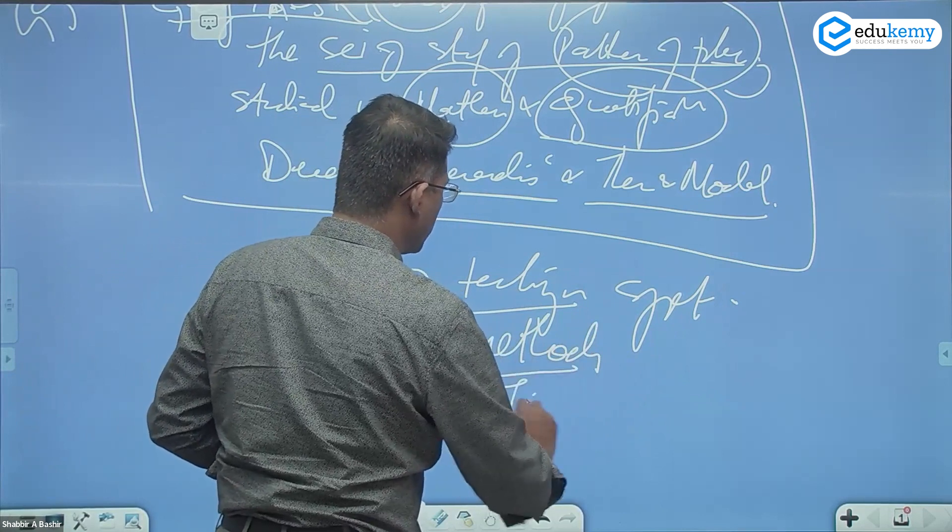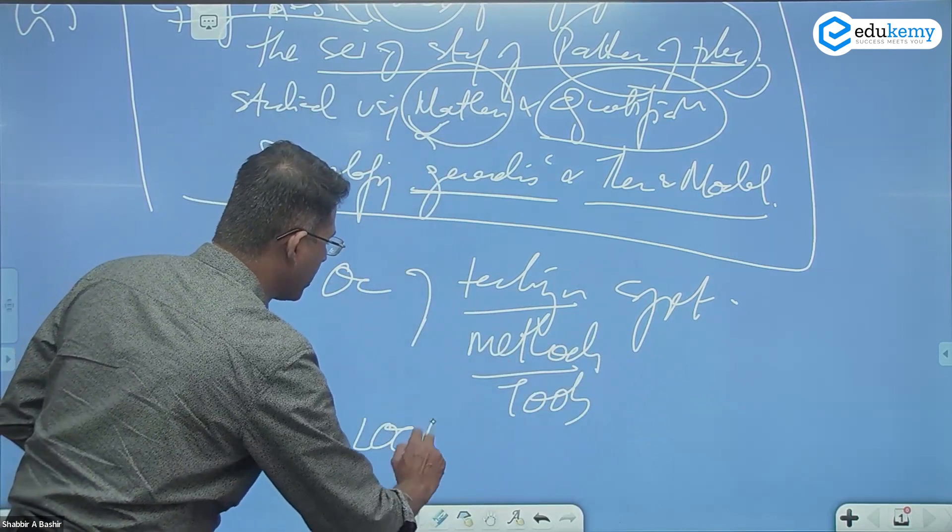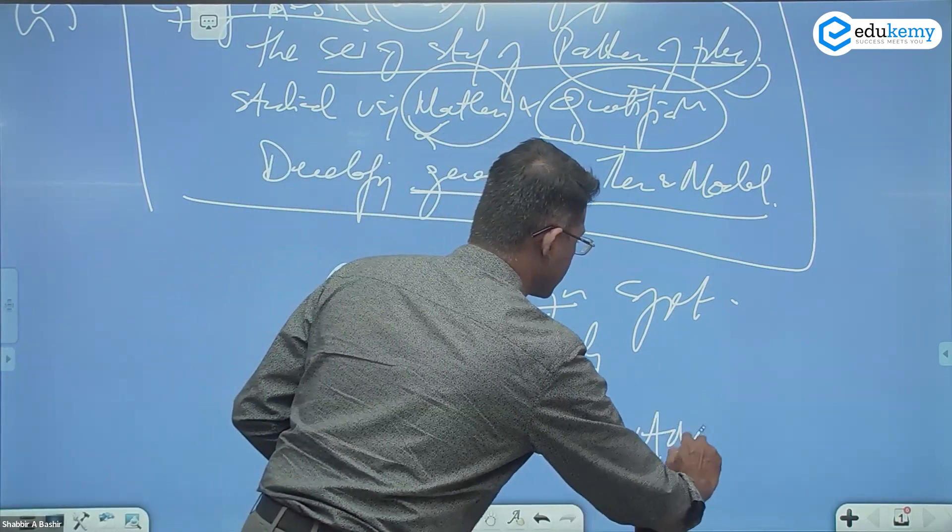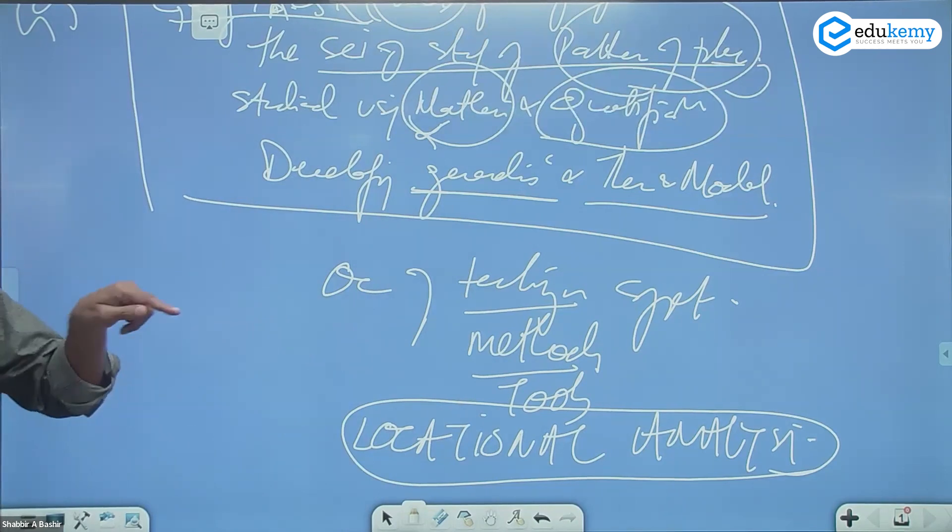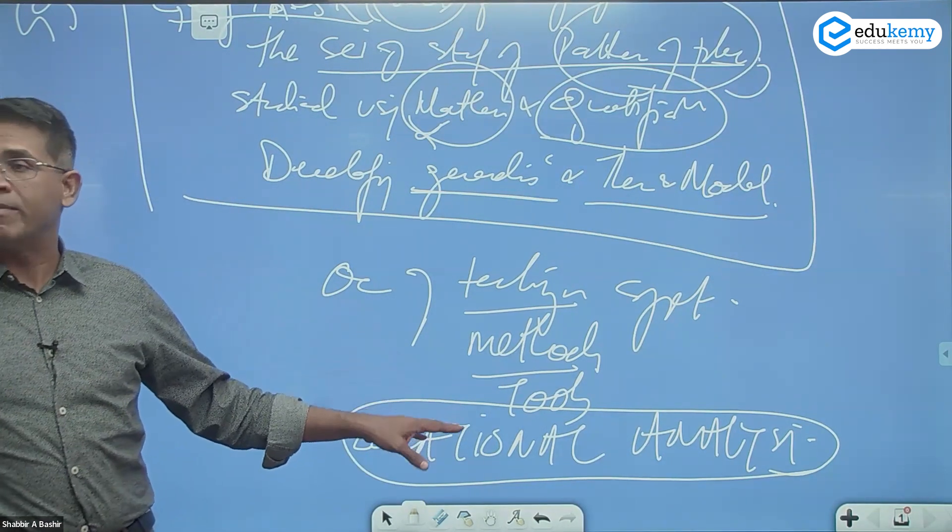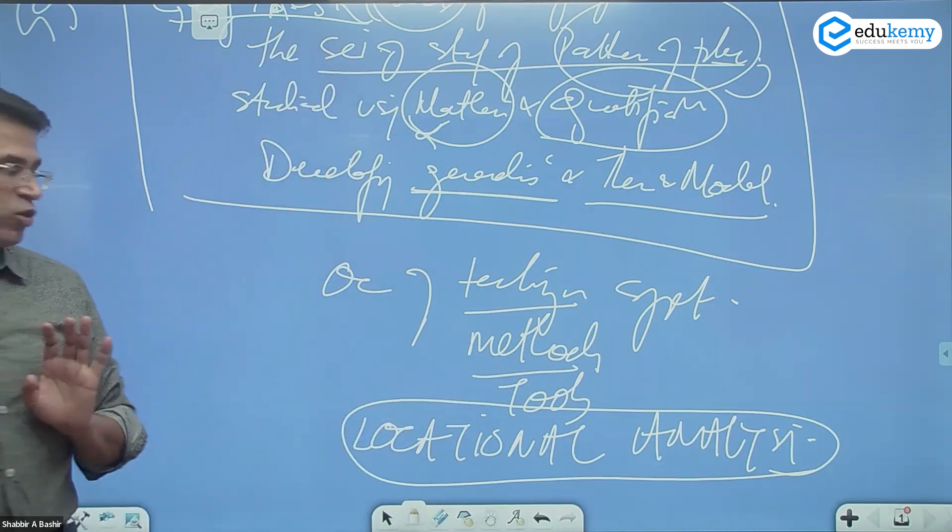One of the tools suggested was a tool called locational analysis. This uses systems theory, this uses geometrical elements. So this is a part of this.